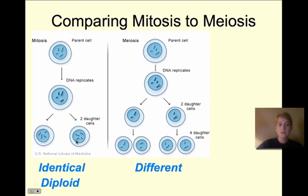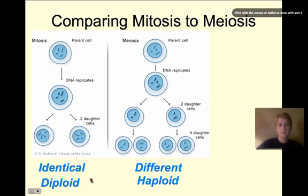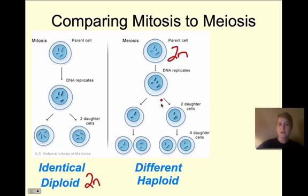In mitosis, the two daughter cells are diploid, just like the parent cell. But in meiosis, those four daughter cells are haploid — 1n. So with mitosis you start with a 2n cell and end with two 2n daughter cells, whereas with meiosis you start with a diploid parent cell and your four daughter cells are 1n. That means the sperm has 23 chromosomes and the egg has 23 chromosomes, and later when the egg is fertilized by a sperm cell, they complement each other to give 46 chromosomes — the perfect amount for a human cell.